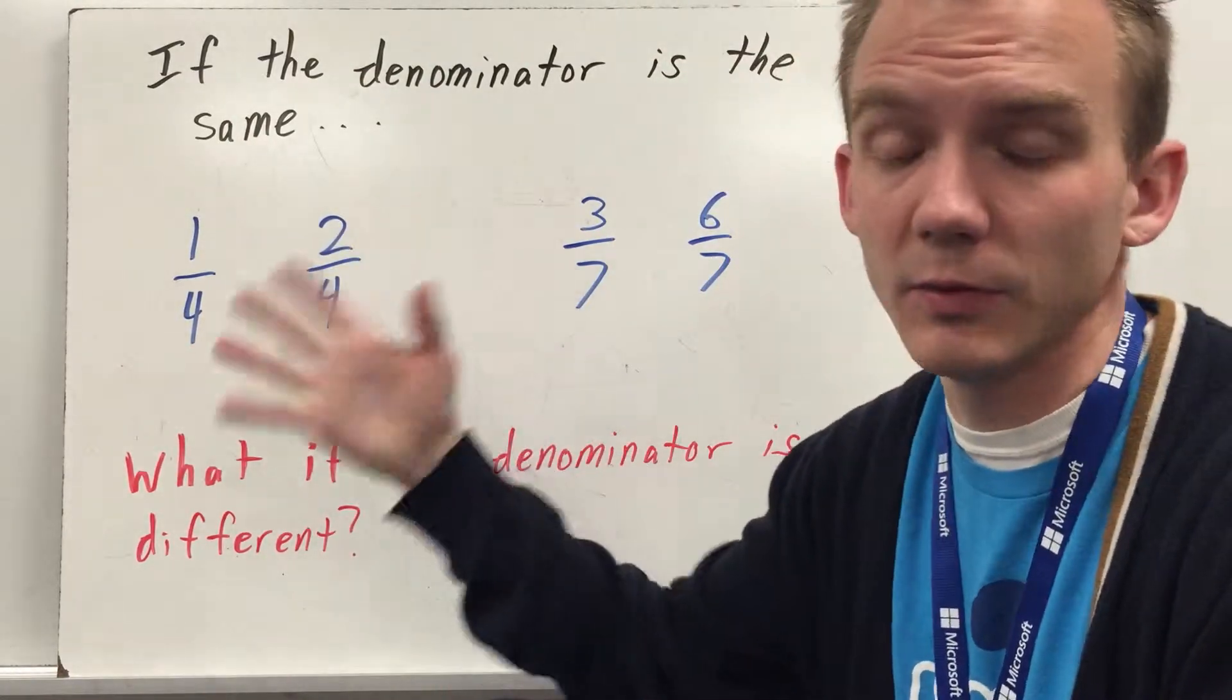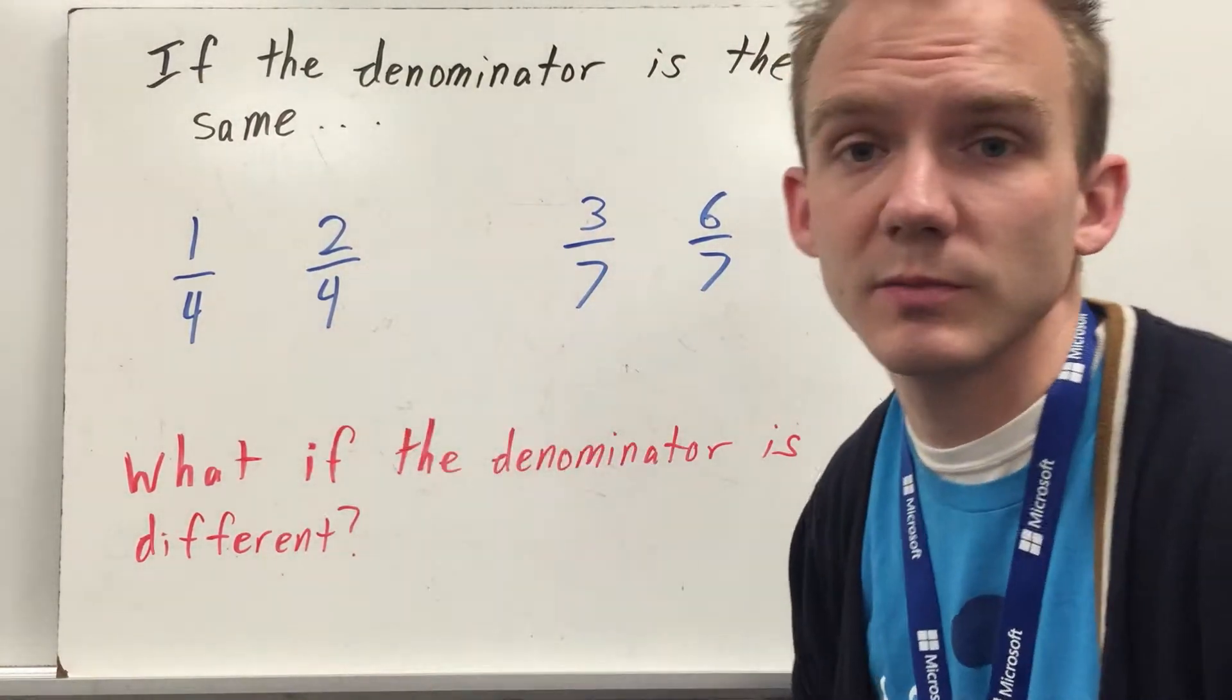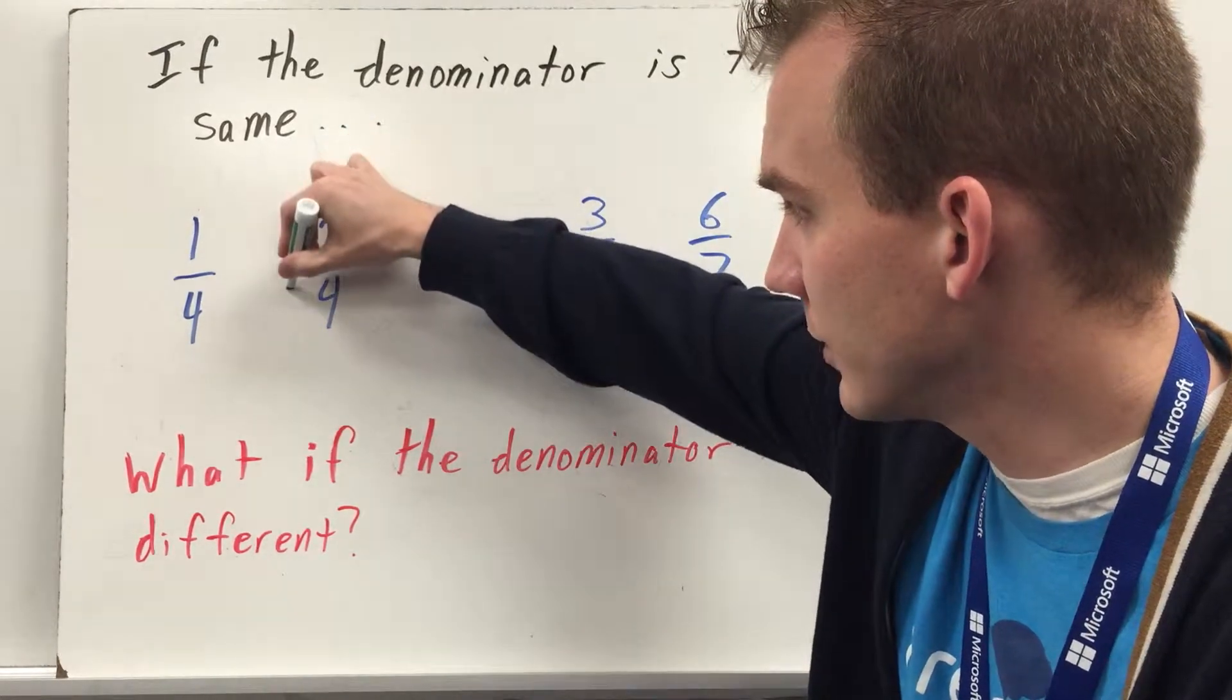So now I'm comparing the numerators. Once this is the same, I'm dealing with fourths. It's like thinking a quarter and two-quarters, what's more?